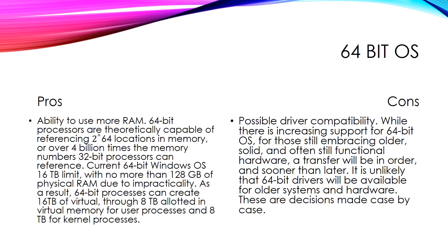One key advantage of 64-bit operating systems is the ability to use more RAM. 64-bit processors are theoretically capable of referencing 2 to the power of 64 memory locations — over 4 billion times the memory that 32-bit processors can reference.